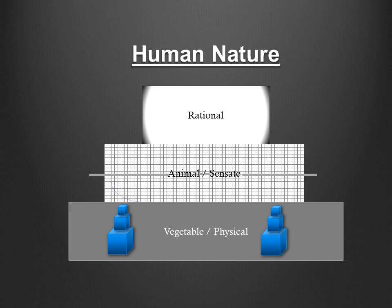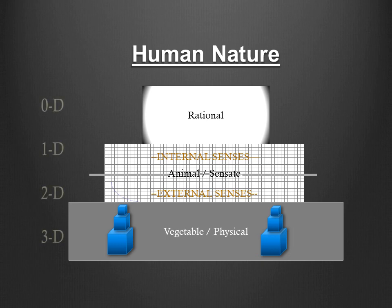We're going to divide this layer into two halves: the internal senses and the external senses. The internal senses are, principally, your imagination and your instinct. And the external senses are what most people mean by senses — seeing, hearing, smelling, tasting, and touching. When we divide up human nature like this, we discover something very profound. The lowest physical level is three-dimensional, the external senses are two-dimensional, the internal senses one-dimensional, and rationality is zero-dimensional.